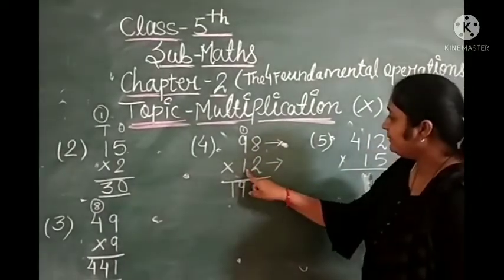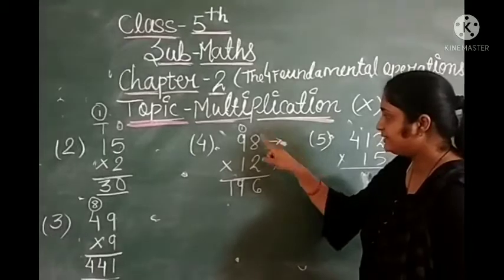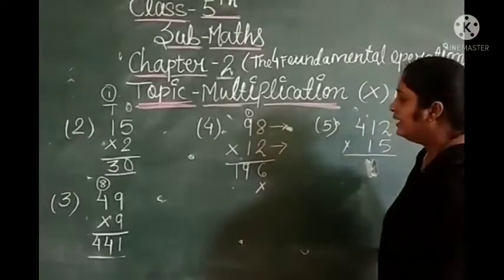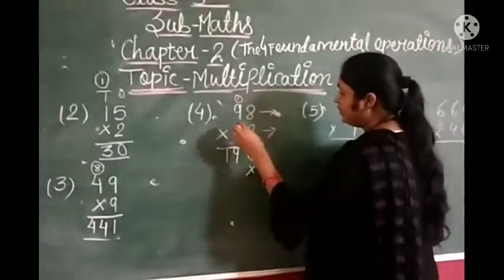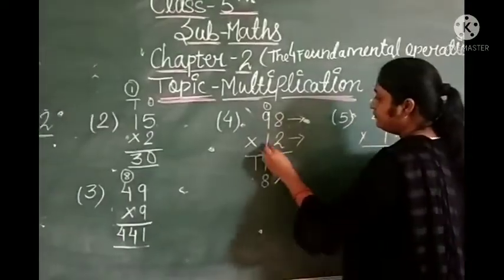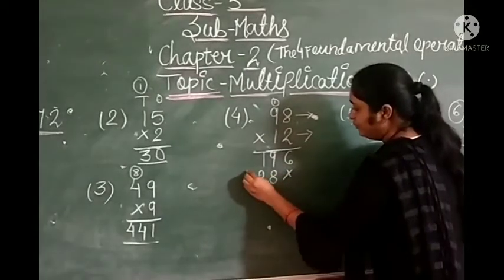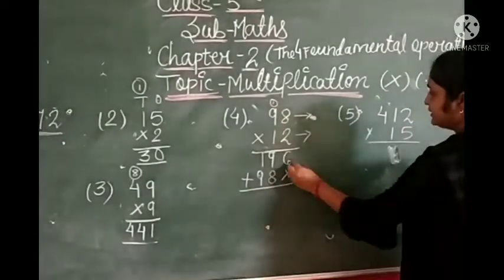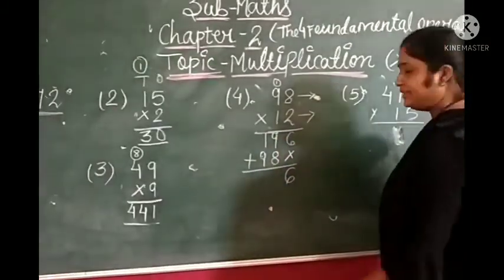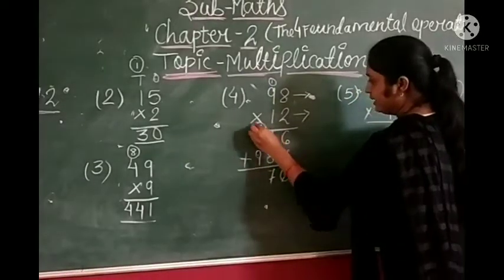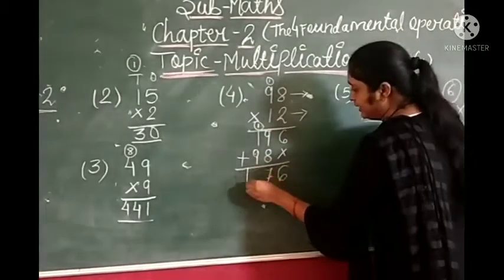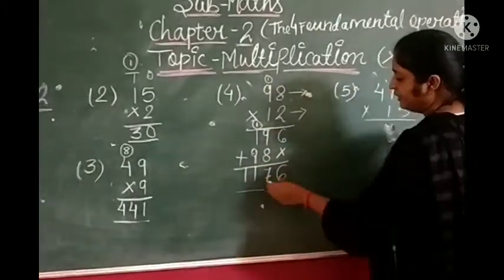Now we multiply 1, but 1 is in the tens place. So we put a cross here and start from the tens place. 1 times 8 is 8. 1 times 9 is 9. Adding up: 8, then 9 plus 7 gives us 16 with 1 carryover. 9 plus 1 is 10, plus 1 is 11. So our answer is 1,176.